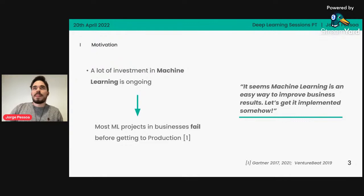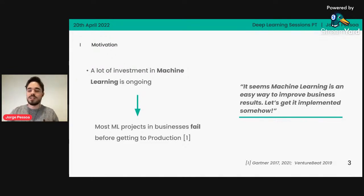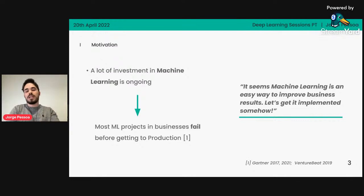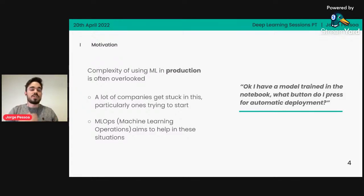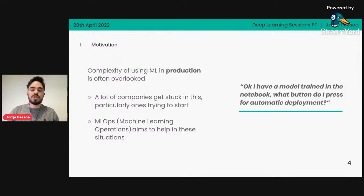As a lot of you know, lately machine learning is like the golden goose of companies — everyone can derive value from it, small companies, big companies, old companies. There is a problem though: a lot of these projects in machine learning actually fail before getting to production. The complexity in taking a machine learning model that is giving you good results and delivering it to production is really overlooked. Companies do not understand the challenges there are in maintaining it, especially larger companies that are not particularly tech-focused. And this is basically the area where MLOps is trying to act on.